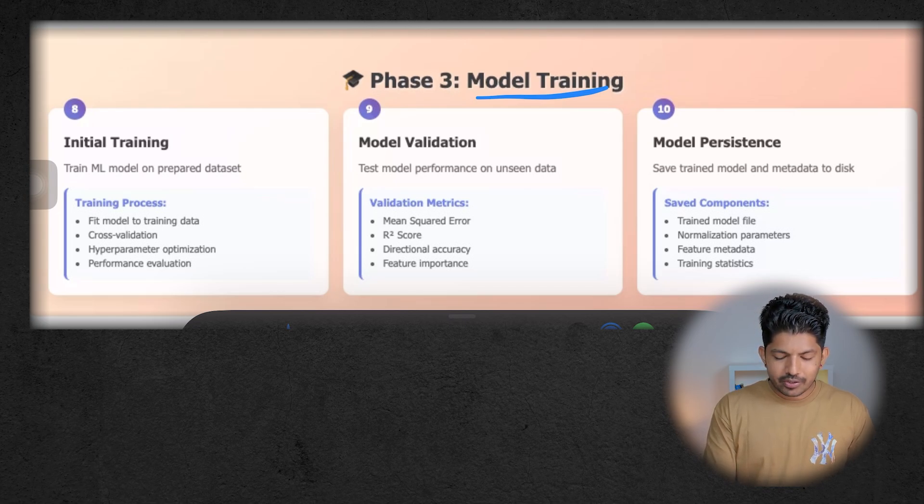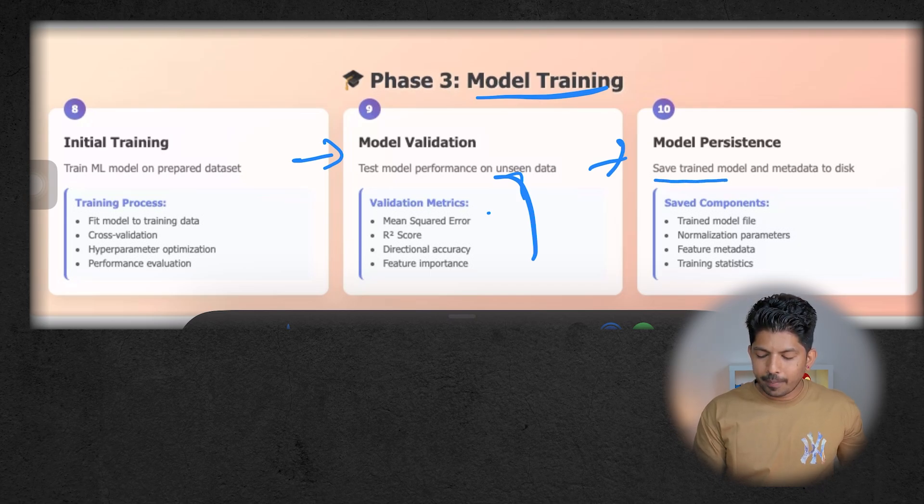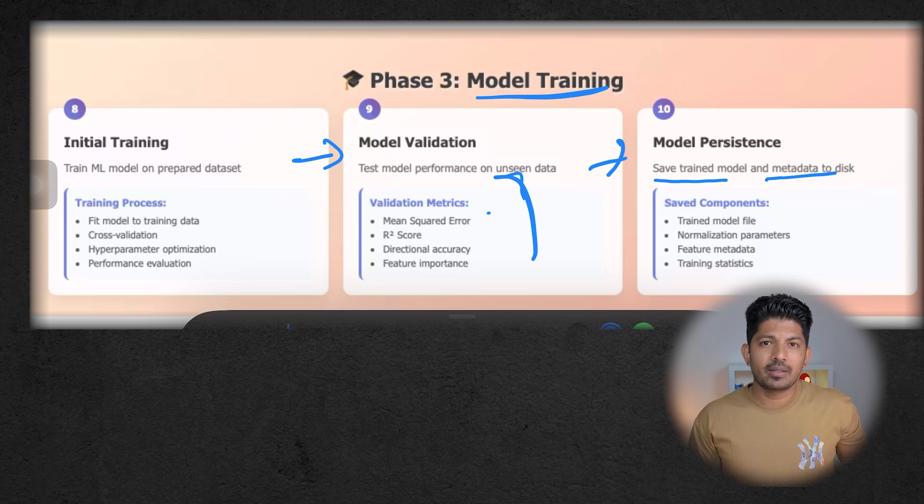In Phase 3, we have model training. In this, the first will be initial training, in which it will train the ML model on prepared datasets. Then it will validate the model, so it will test the model on unseen data. It will calculate various metrics, which can be like mean squared error, R-squared score, directional accuracy, and feature importance. And then it will save the trained model and metadata to disk. Because if we do not save the data, then it will all be gone because it is not persistent data, and then all our hard work will be gone and all the compute and resources we have used will be wasted. So we have to make sure the model is persistent and we are saving the data somewhere.